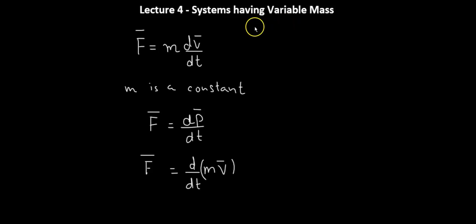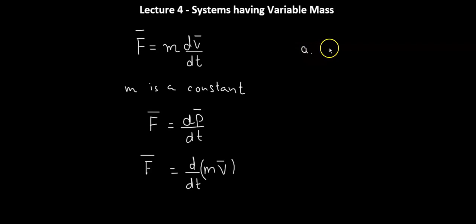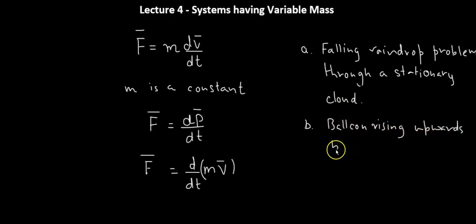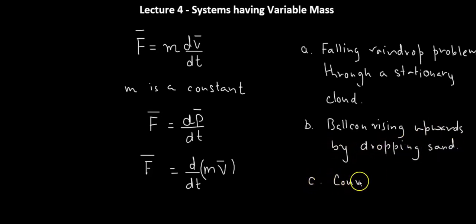To understand systems having variable mass, we are going to consider three important problems. The first problem is the falling raindrop problem through a stationary cloud. The second is a balloon that rises up by dropping sand from it. The third is the problem of a conveyor belt carrying some mass. Let's start with the first problem.